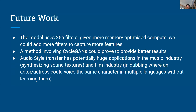For our future work, we are going to use more filters — we currently use 256 filters, but the paper mentions using 4096 filters, so that's our next approach. A method involving cycle GANs could also improve our model and provide better results. Audio style transfer has potential applications such as changing the voice of a character, or for dubbing in the film industry.